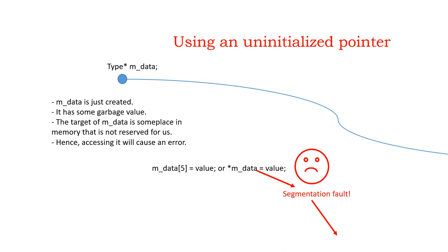A pointer is nothing but a regular integer. When you create a pointer and don't initialize it, there is garbage in it — a bit pattern that is nevertheless a number. That number doesn't belong to you; it's an address of a byte somewhere in memory that you don't own. If you write to it, the computer explodes — segmentation fault. You must never use a pointer that is not set either to null or to a valid address of memory.